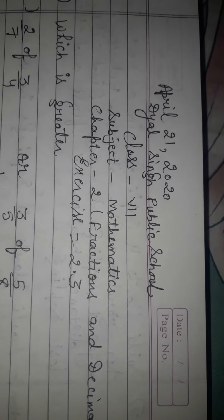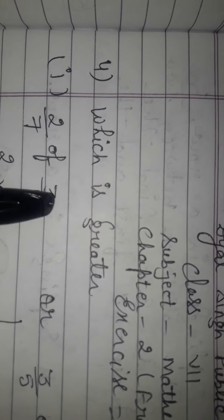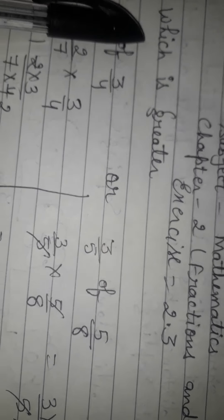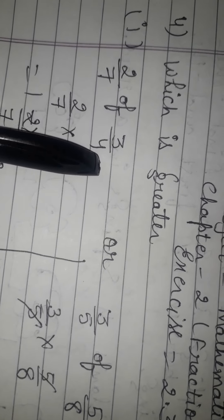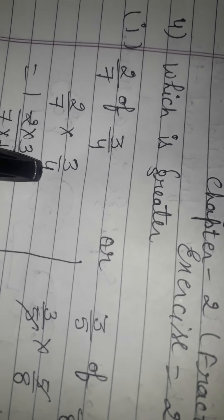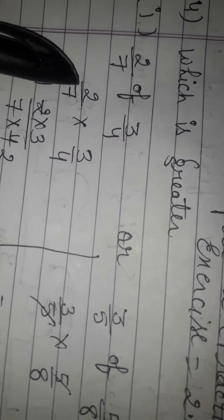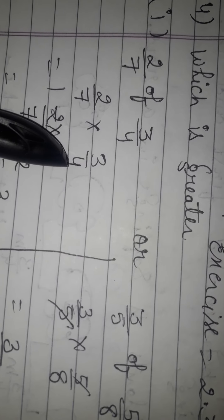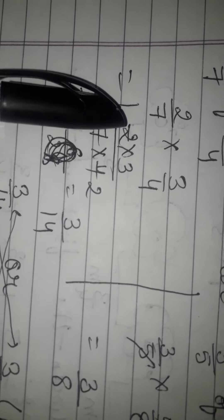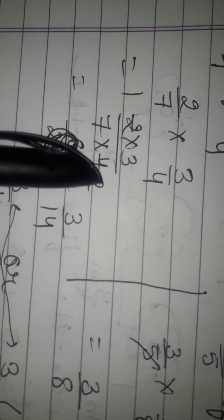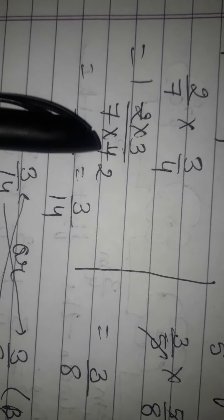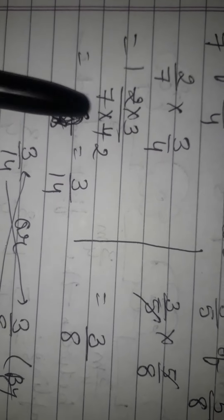The 4th question asks: which is greater? You have to find which side is greater — 2/7 of 3/4, or the other side. 'Of' means multiply. So 2/7 multiplied by 3/4 — multiply numerator by numerator and denominator by denominator: 2 multiplied by 3 upon 7 multiplied by 4. Cut 2 and 4; in the numerator 3 is left, and in the denominator 7 times 2 is 14. This gives LHS = 3/14.